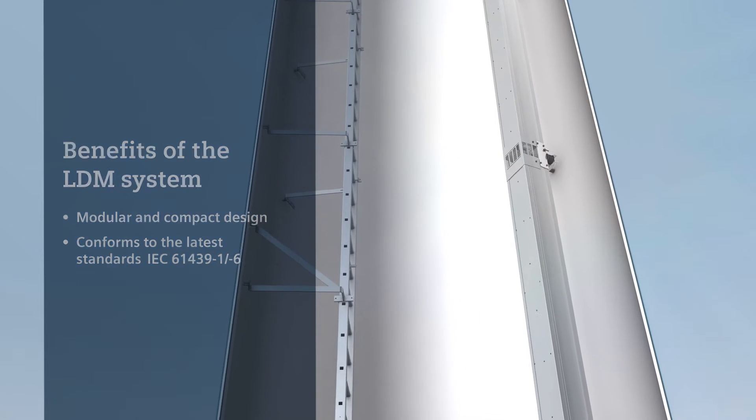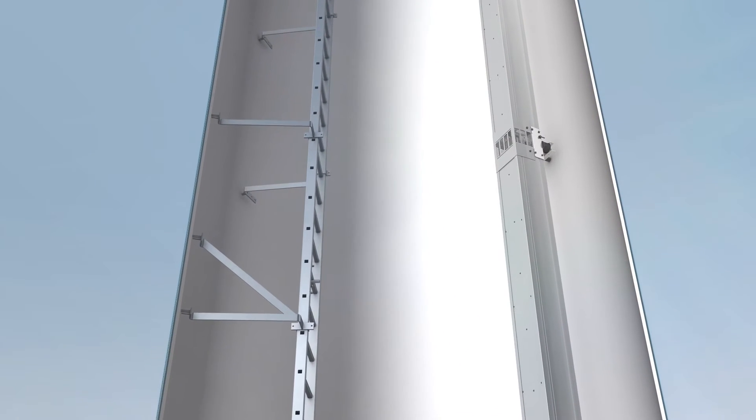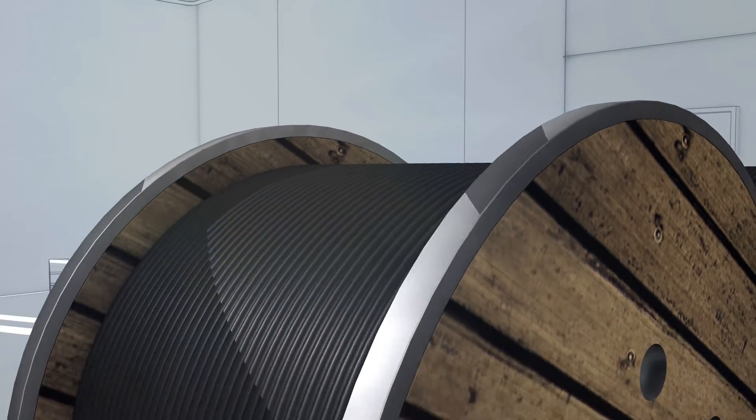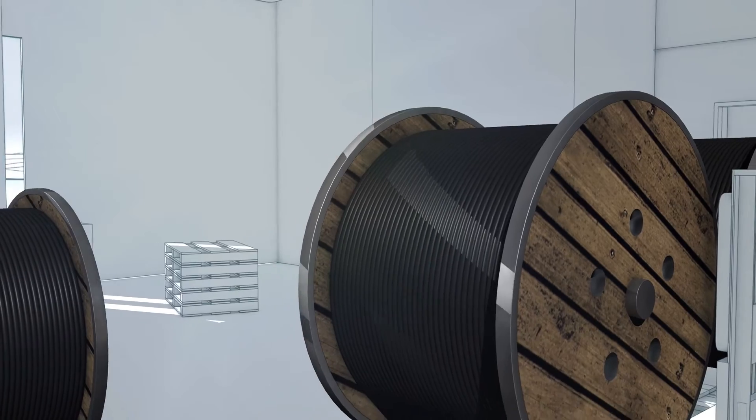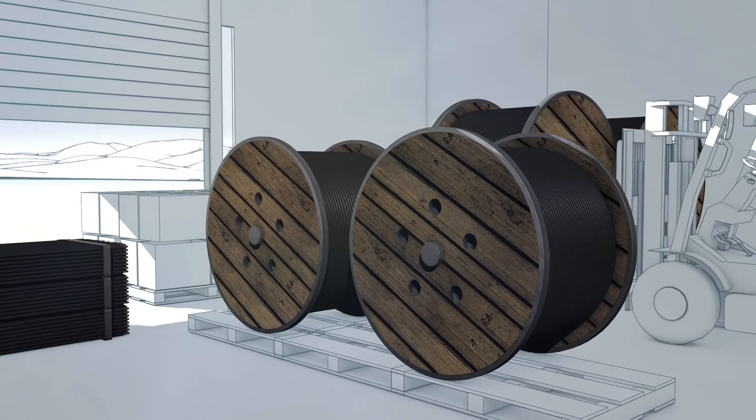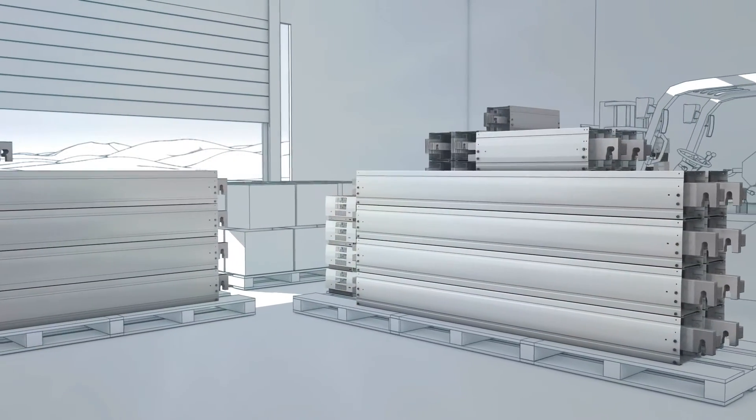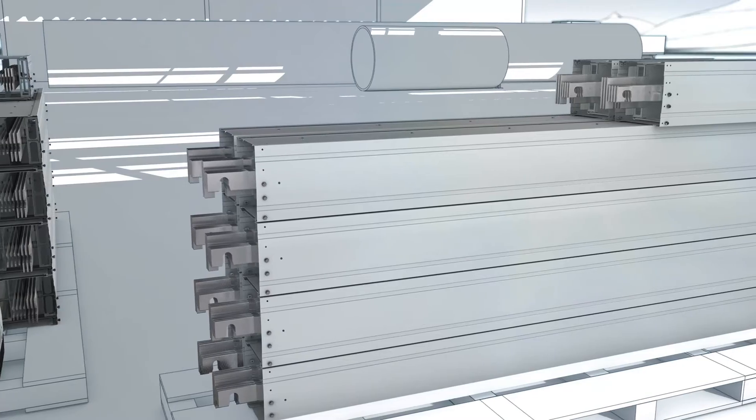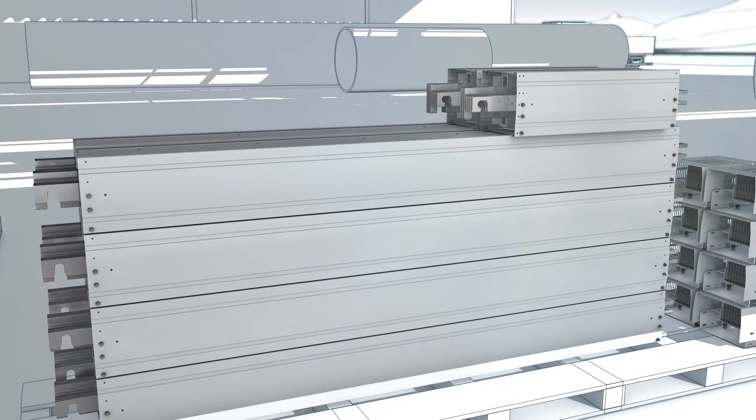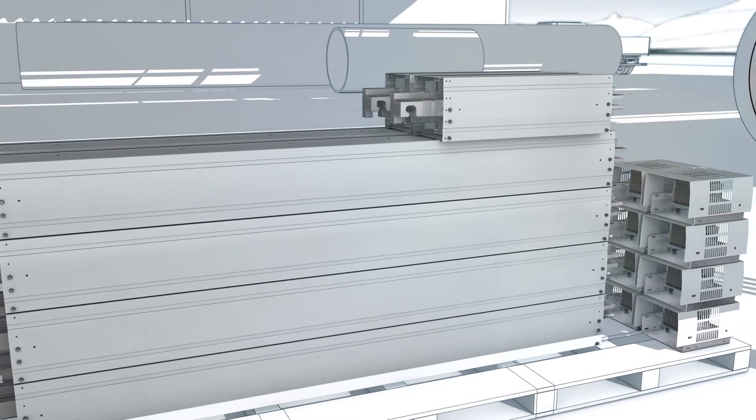The system conforms among other things to the latest standards IEC 61439 parts 1 and 6. Thanks to design verification by means of tests, it is exceptionally safe and reliable in operation. The benefits are already appreciable during the installation phase. In a cable based solution, the individual conductors must usually be cut to size through a complex process. With the LDM system however, a combination of several bus bar units is delivered precisely as a prefabricated assembly for each tower segment.